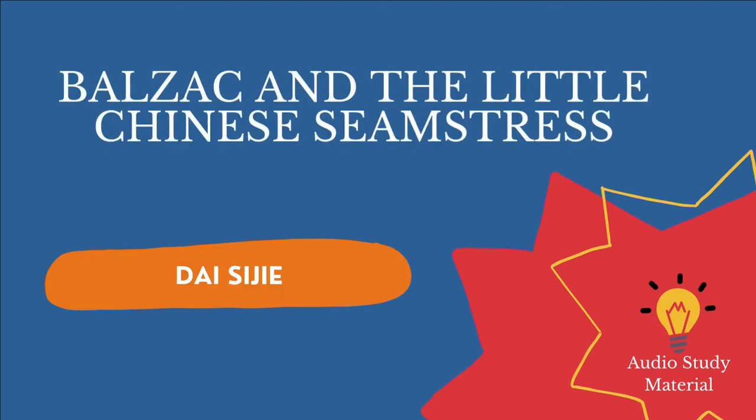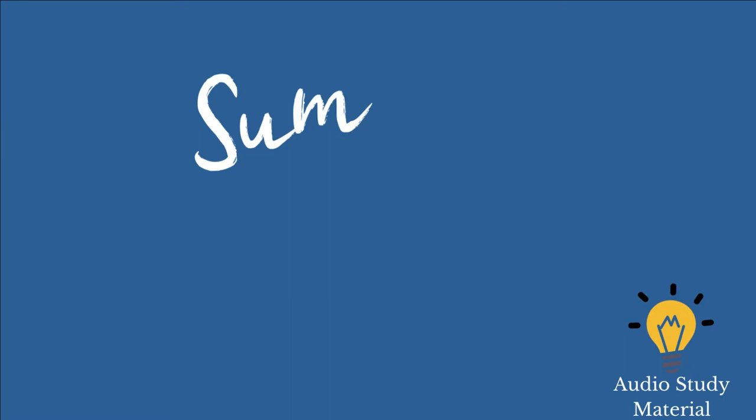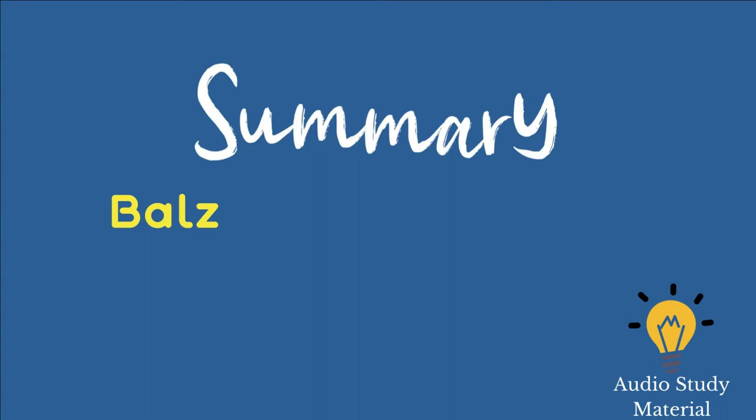Summary of Balzac and the Little Chinese Seamstress by Dai Sijie. Near the Chinese-Tibetan border, Luo and the narrator arrive at the mountain Phoenix of the Sky, a dizzyingly tall and extremely rural mountain.